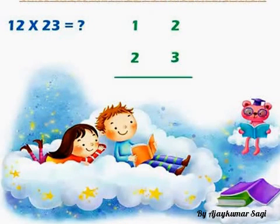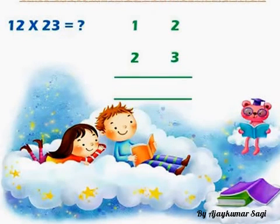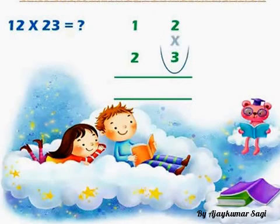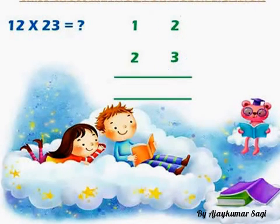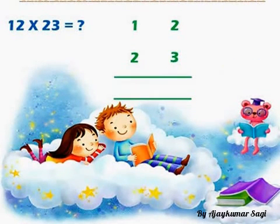Now we have to find out the solution. From the right side vertical digits, we multiply first — that is 2 into 3, which equals 6. Place 6 here.